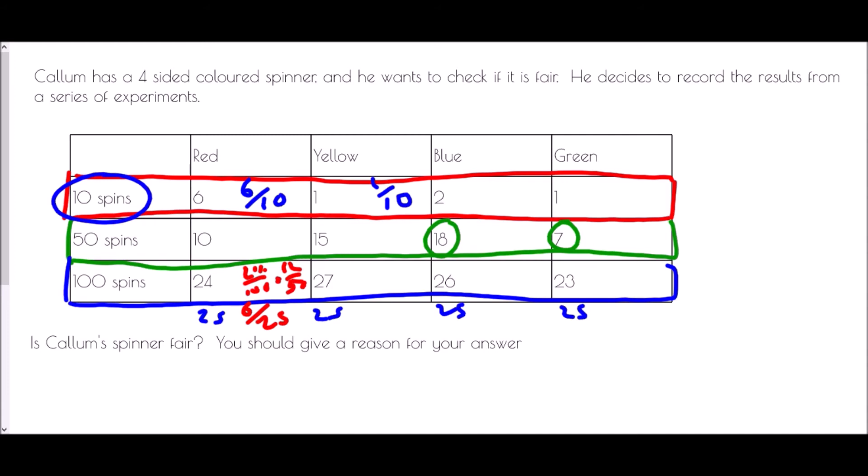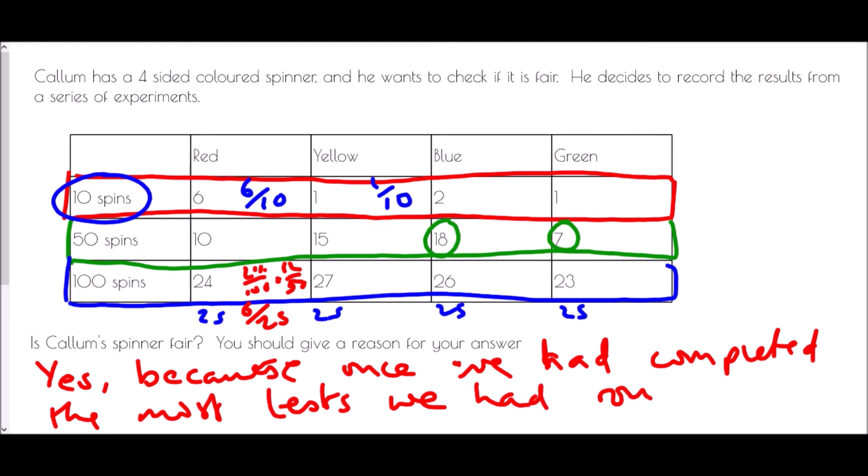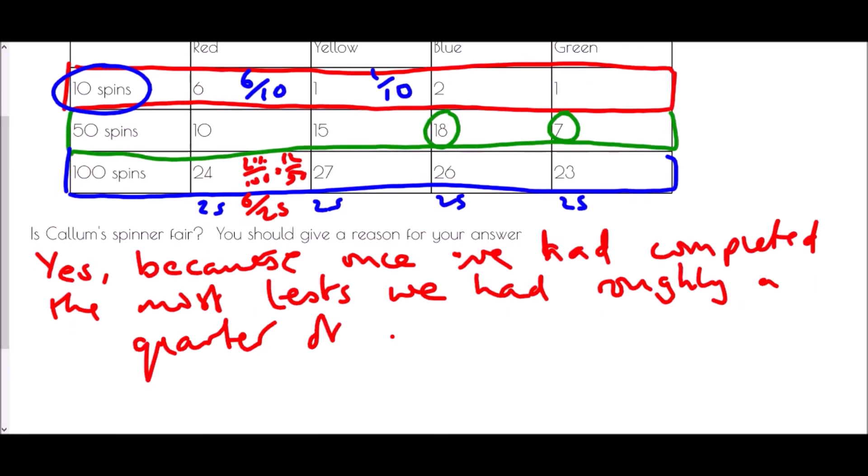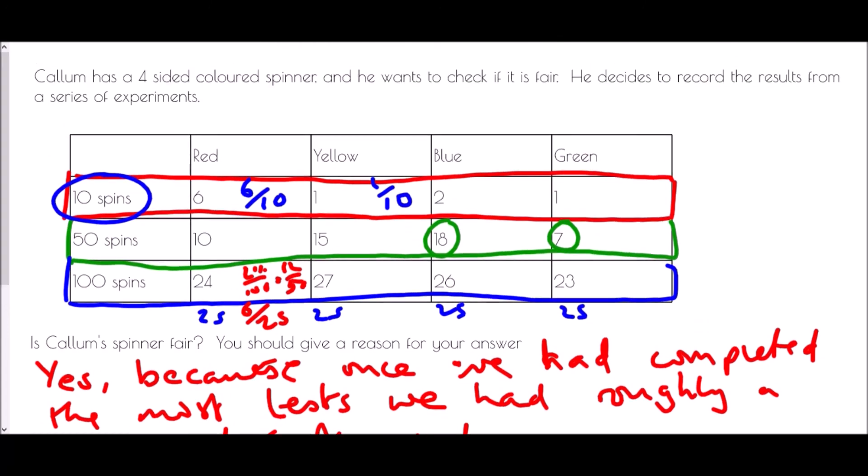And so the change in the relative frequency is because the more tests you do, the better your experiment is at predicting or estimating the probability. And so I will be saying that yes, it is fair, because once we had completed the most tests, we had roughly a quarter of each. And the key here is that as you do more tests, you are getting closer to the true probability of each of these events. So the more tests you do, the better results you're going to get.